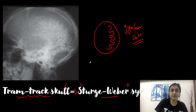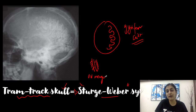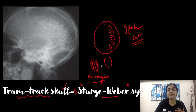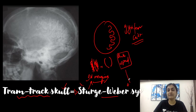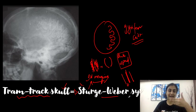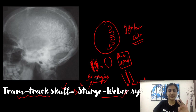The tram-track appearance is also seen in the optic nerve: optic nerve meningioma shows a tram-track appearance, where the optic nerve is seen separately with tumor around it — in contrast to optic nerve glioma, which gives rise to fusiform thickening of the nerve. The third place is ankylosing spondylitis, where calcification of the interspinous ligament and fusion of the anterior vertebral bodies gives rise to a tram-track appearance on spine X-ray.